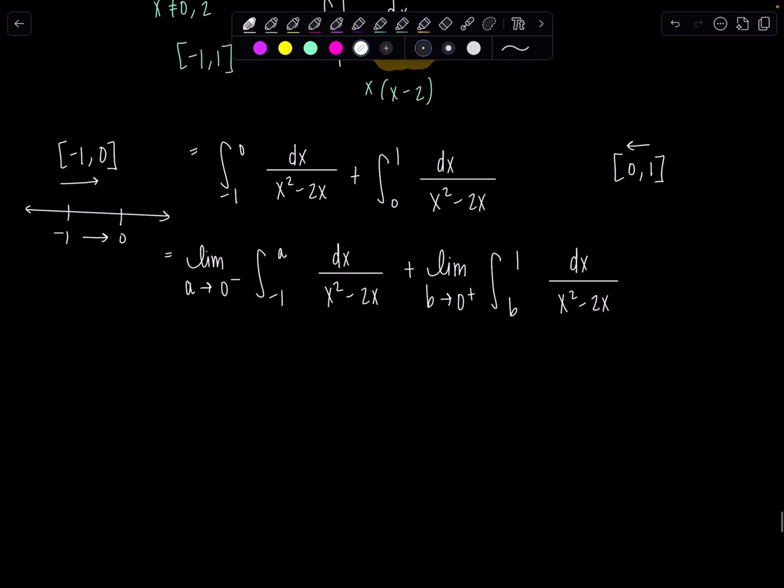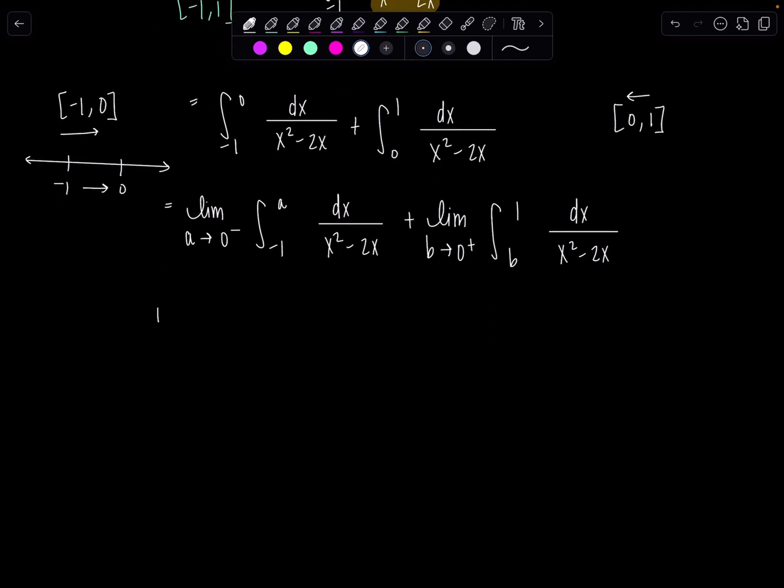The nice thing is, even though we do have to do partial fraction decomposition, we just do it once so we can use it for both integrals. So we have one over, I know the denominator factors into x times x minus two. So those are two linear factors. We'll have a over x plus b over x minus two.